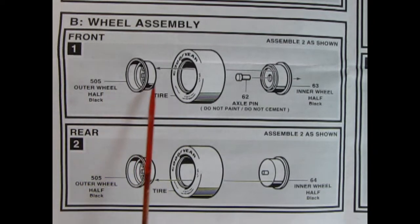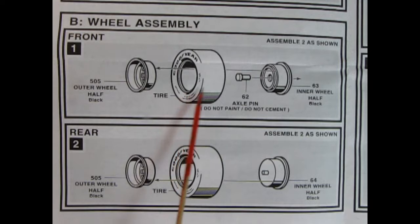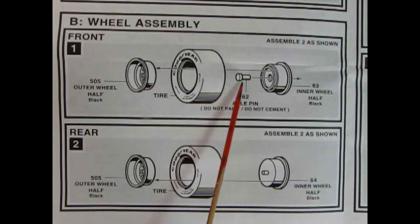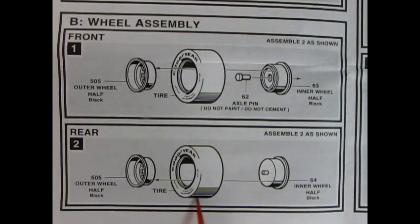And then panel three, we add our air cleaner in place, our distributor, and the panel two assembly glues on the front. Then we've got our shift linkage going on the transmission and our two-piece exhaust headers. Now panel B shows our wheel assembly. Here we have the outer wheel going into these nice Goodyear racing slicks. And then on our inner wheel, we also have a little axle pin. Make sure you do not glue that because you want your wheels to rotate. And then in the rear, we're doing pretty much the same thing.